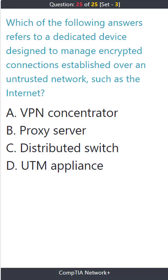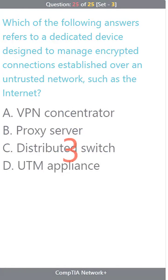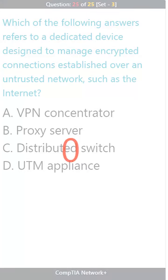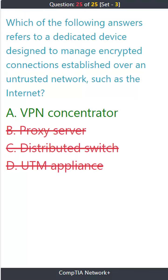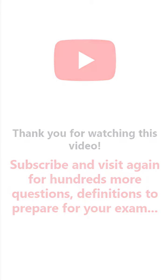Question 25. Which of the following answers refers to a dedicated device designed to manage encrypted connections established over an untrusted network, such as the internet? A. VPN concentrator. B. Proxy server. C. Distributed switch. D. UTM appliance. The correct answer is A. VPN concentrator.